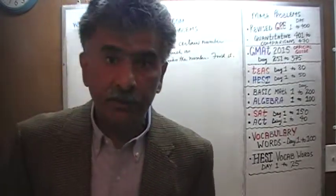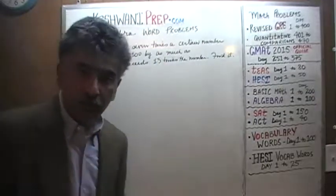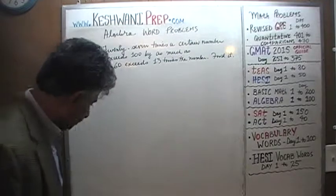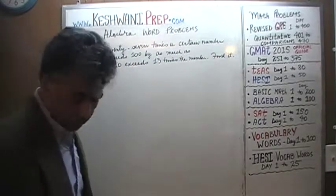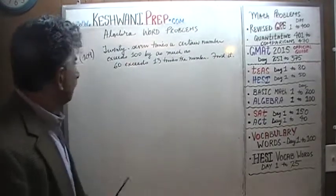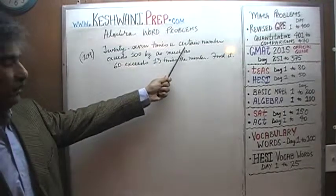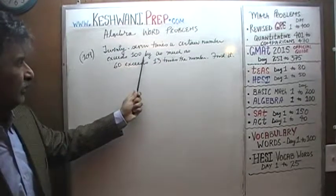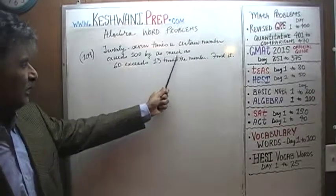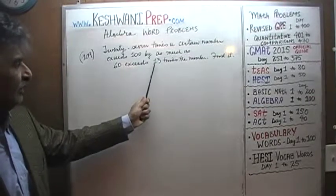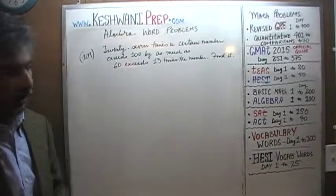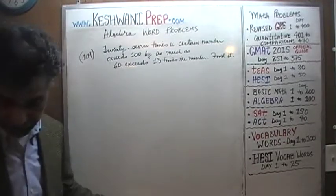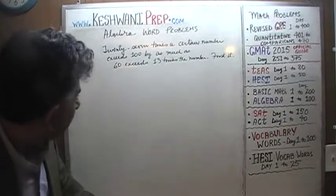Problem number 109 is already on the blackboard. It says: 27 times a certain number exceeds 100 by as much as 60 exceeds 13 times the number. Our job is to find it.